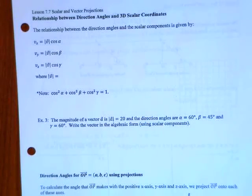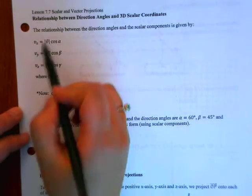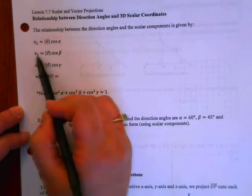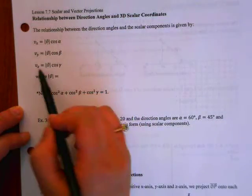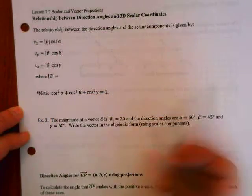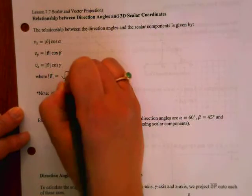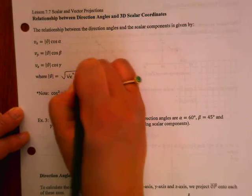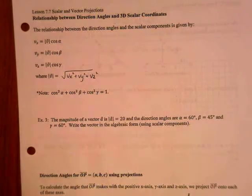Alright, the relationship between the direction angles and their scalar components is given by Vx equals magnitude of V cos alpha, Vy is magnitude of V cos beta, Vz is magnitude of V cos gamma, and the magnitude of V is the square root of Vx squared plus Vy squared plus Vz squared.